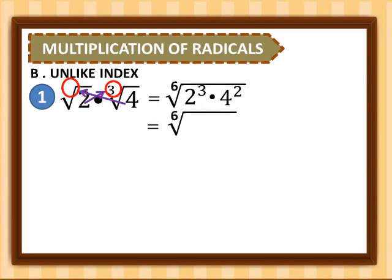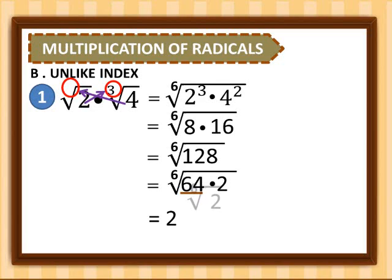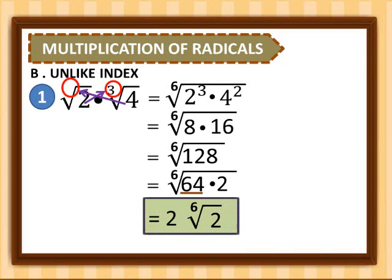So 2 cubed is 8 and 4 squared is 16. Multiply 8 times 16, that is 128. Simplify the 6th root of 128: we have 64 times 2, and the 6th root of 64 is equivalent to 2, leaving the 6th root of 2 in the radical. So for number 1, we have 2 times the 6th root of 2.